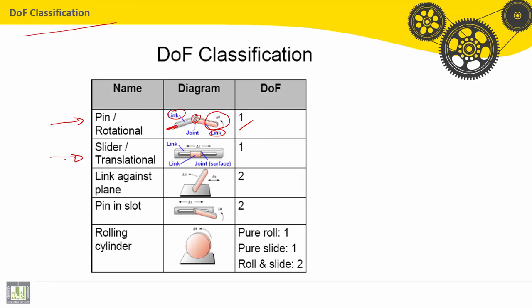The second type is called slider or translation. This link is the slider. This link is fixed to the ground. So the joint between link 1 and link 2 is the surface contact. So the degree of freedom here is the translation or linear motion x or delta x. So degree of freedom is 1.